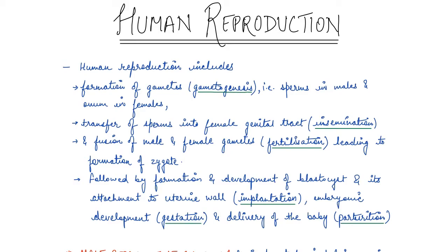Now once the zygote is formed, it develops into a blastocyst and it attaches to the uterine wall, which is nothing but implantation of the zygote. Now once it is implanted to the uterine wall, it develops into an offspring during the gestation period, and then it is delivered outside the female body. So delivery of the baby is known as parturition. So this is the entire process of human reproduction, which is actually very complex. So let's start off with the male and female reproductive systems first.